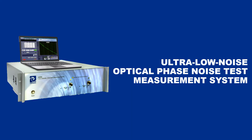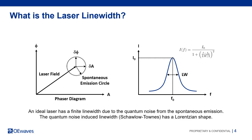Let's dive into some technical terms and discuss the importance of this system and how the OE 4000 can be valuable and useful. We start with a common parameter often used to describe the laser spectral coherence or frequency noise: the laser line width.